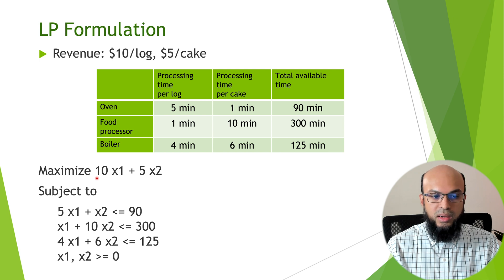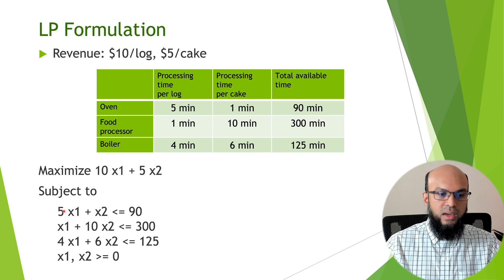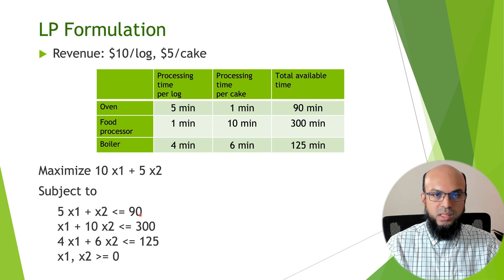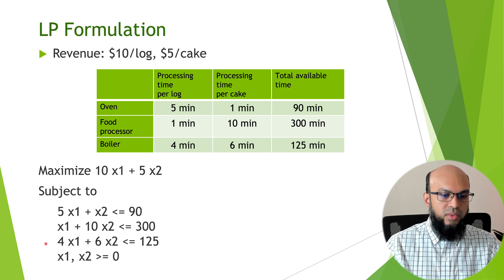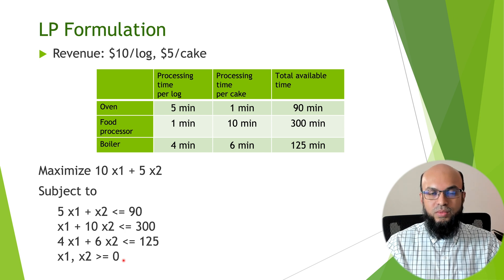Here we want to maximize 10 times x1, since each log gives revenue of 10, where x1 is the number of Bowdoin logs, plus 5 times x2, where x2 is the number of cakes. Subject to: the first constraint comes from the oven — 5x1 + x2 ≤ 90. Similarly, the second constraint is for the food processor and the third for the boiler. We also require x1 and x2 to be greater than or equal to zero, since negative quantities make no sense.